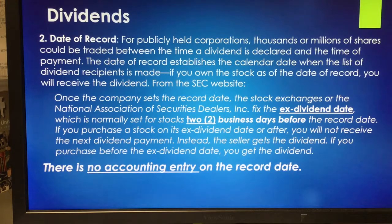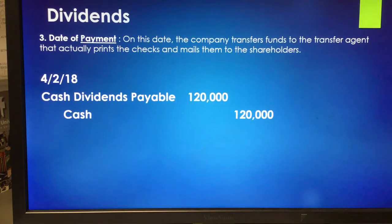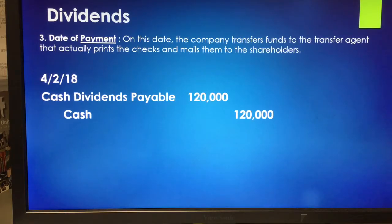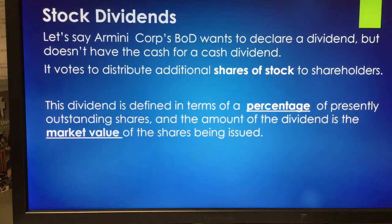There is no accounting entry on the date of record — it's really a mechanical function of figuring out who gets the dividend. On the date of payment — April 2 — the company transfers funds to the transfer agent, who prints the checks and mails them to shareholders. Simply debit cash dividends payable and credit cash. The transactions aren't overly involved, but getting the dividend amount right is important. Next up: stock dividends.